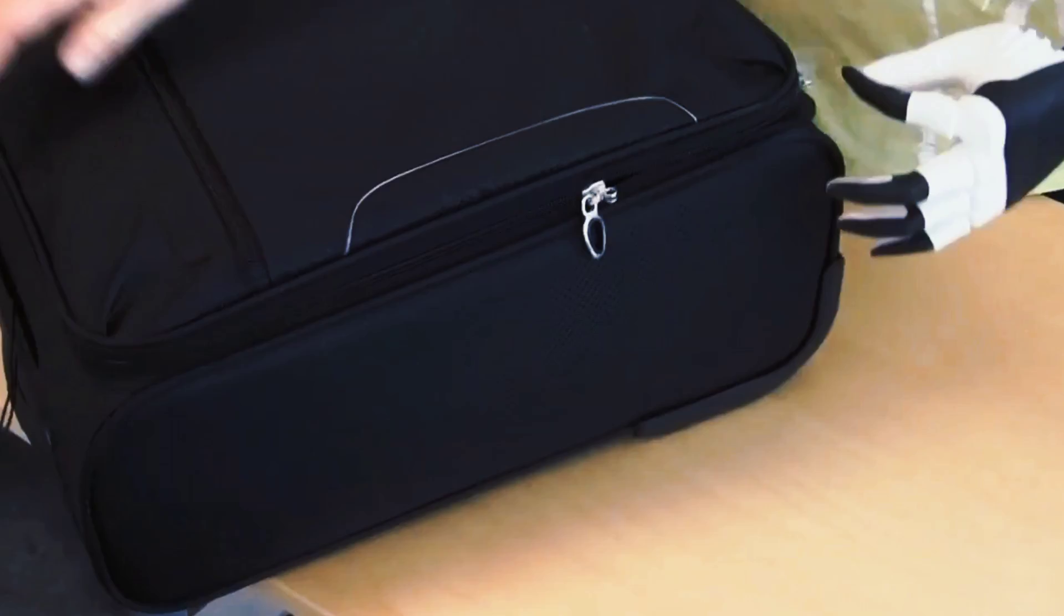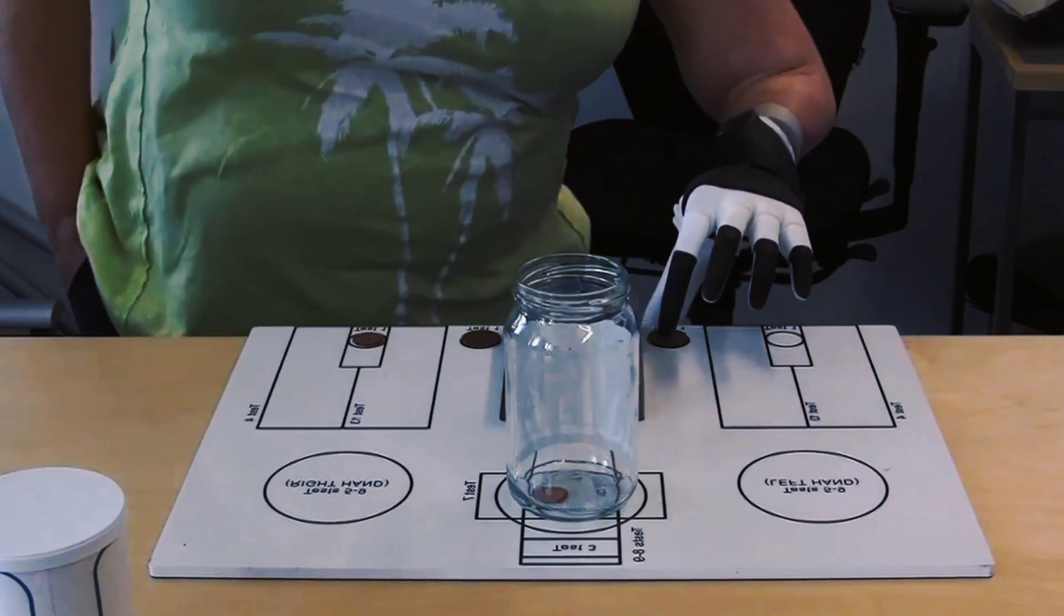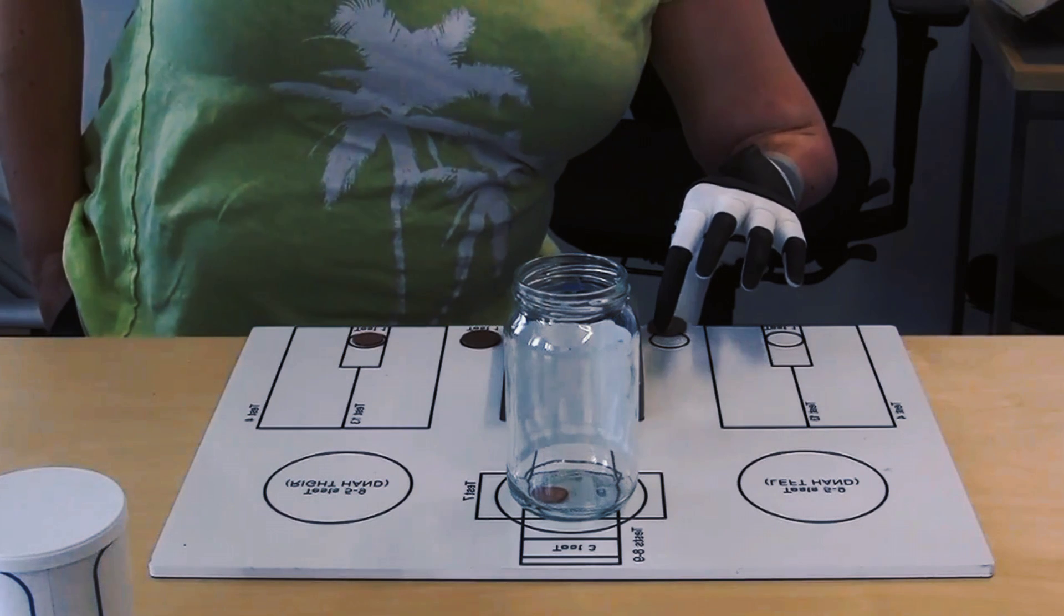It also has six motors that can move the fingers independently, allowing Karen to perform various tasks such as grasping, pinching, and pointing.